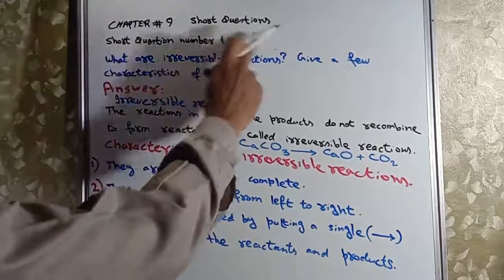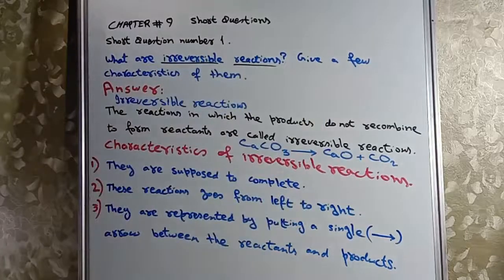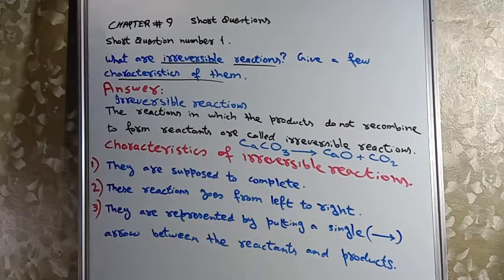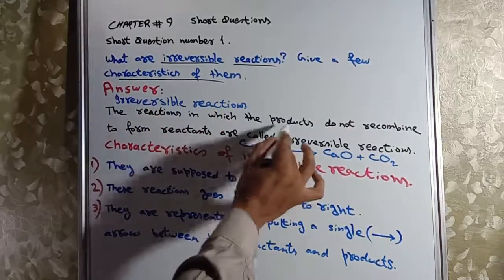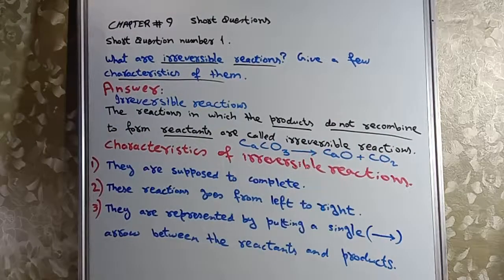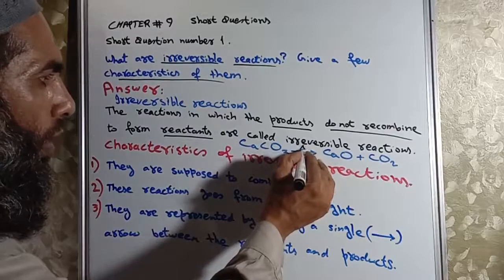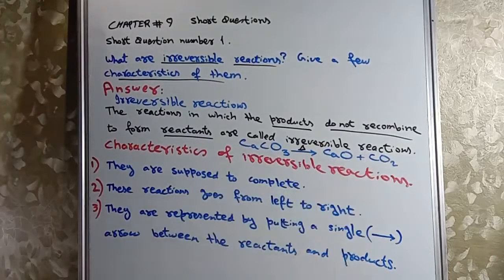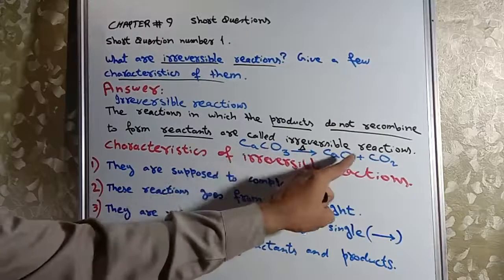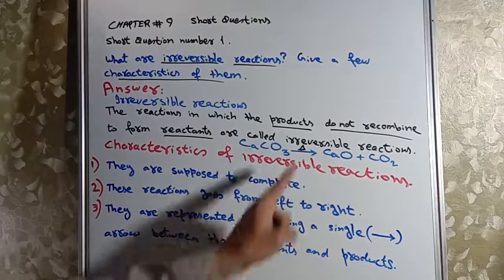What are irreversible reactions? Definition: the reaction in which products don't recombine to form reactants are called irreversible reactions. For example, calcium carbonate decompose by heat then it becomes calcium oxide and carbon dioxide. Single arrow represent karte hain, so this means that these two things do not recombine. If products recombine not, these are called irreversible reactions.